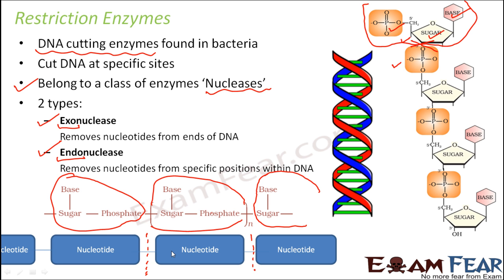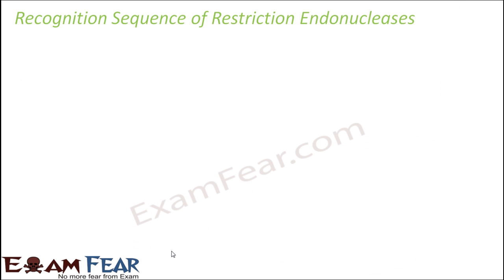Now restriction enzymes can also be exonuclease or endonuclease — both types of restriction enzymes can exist. However, the restriction enzymes we are going to talk about here are mostly restriction endonucleases — those enzymes which cut the DNA at a specific location within the molecule, not necessarily from outside. Now the question is: how do the enzymes know where to cut the DNA? First of all we have to select the desired gene, then locate that gene on the DNA, and then cut that part of DNA which carries that desired gene.